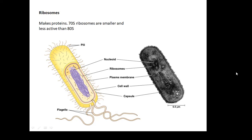Ribosomes — the ribosomes are floating around; they're not attached to any reticulum. They are 70S ribosomes, which are smaller and less active than the 80S ones. So, 70S simpler ribosomes floating around in the cytoplasm.